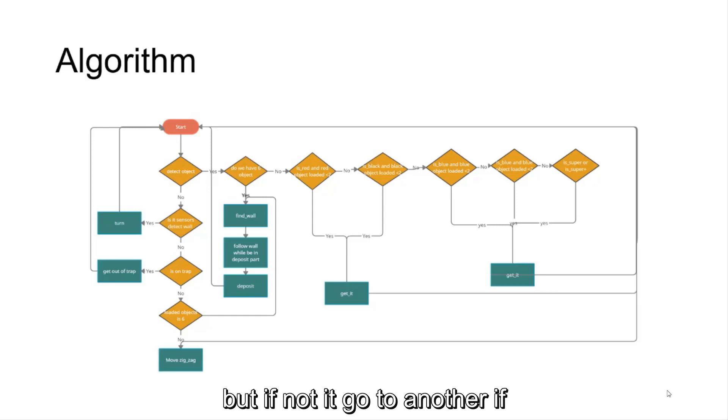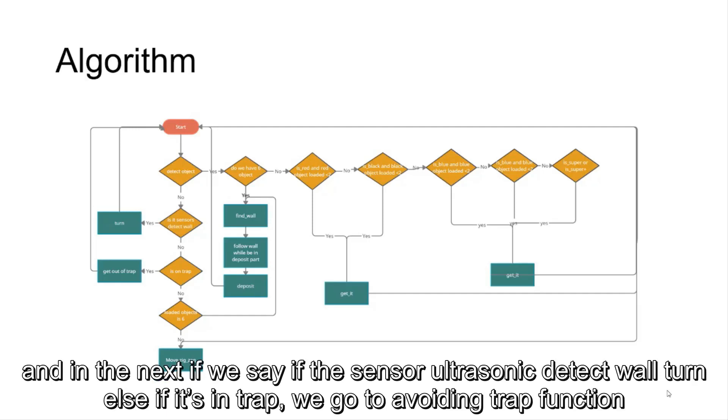But if not, it will go to another if. And in the next if, we said, if the ultrasonic sensor detects a wall, turn, else if it's on a trap,